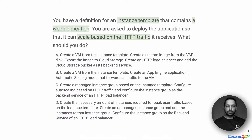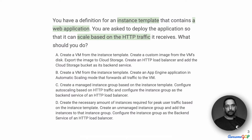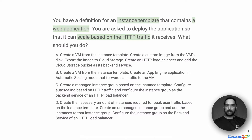Before we look at each of the options, let's consider the key requirements. One, there is an instance template — a blueprint of what the machine should be. Two, we are serving a web application, so compute is going to happen every time a request comes in. Three, we want to scale based on HTTP traffic: low traffic means low cost, but as traffic increases we are okay with provisioning more machines.